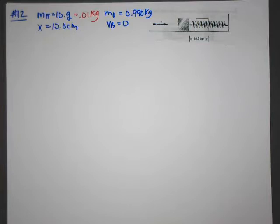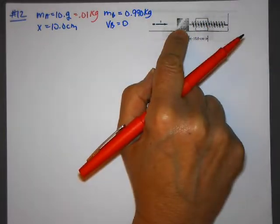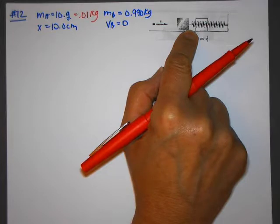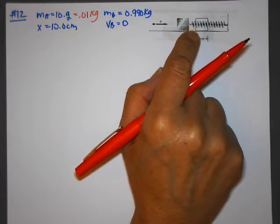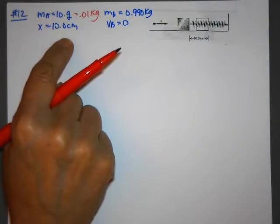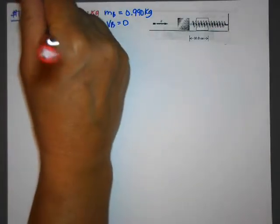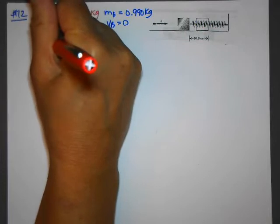It strikes and embeds itself in a block of mass 0.99 kilograms. The bullet is going and it's going to embed itself in the block. And this is at rest on a frictionless horizontal surface and is attached to a coiled spring. The impact compresses the spring 10 centimeters, so we'll right away convert that to meters, 0.1 meters.